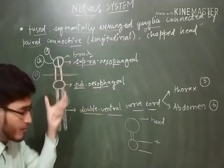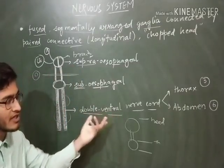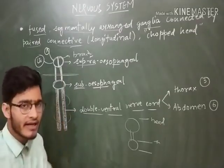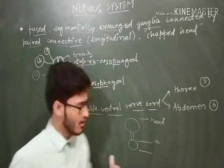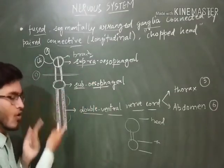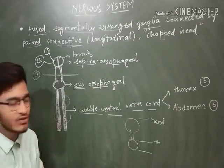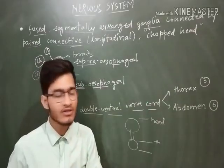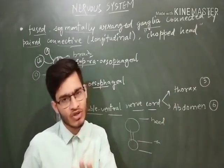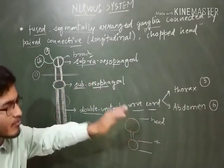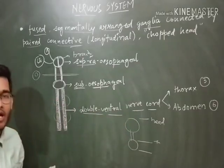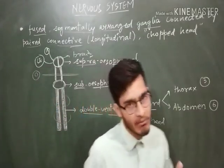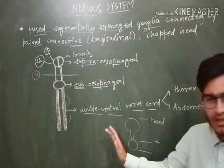Now, double ventral nerve cord passes, as the name indicates, ventral. And I have already told you that the whole sequence passes through the ventral side of the body. Then there are other ganglions that are connected. And how many ganglions are there? In thorax, there are three more ganglions. And in abdomen, there are six more ganglions. It means that there are nine ganglions added, and then your nervous system is complete.